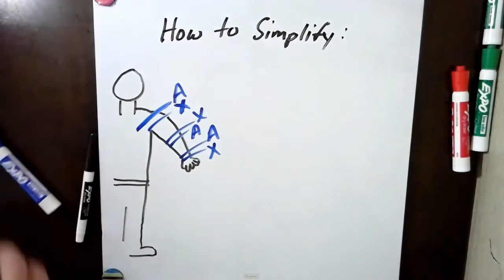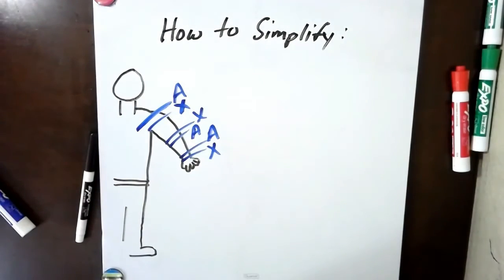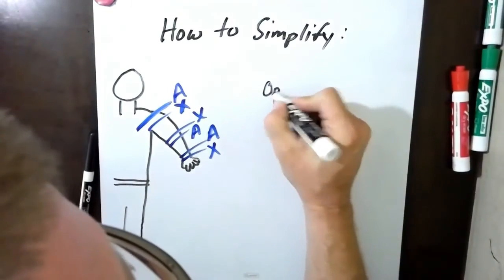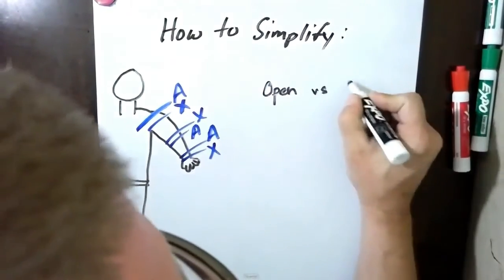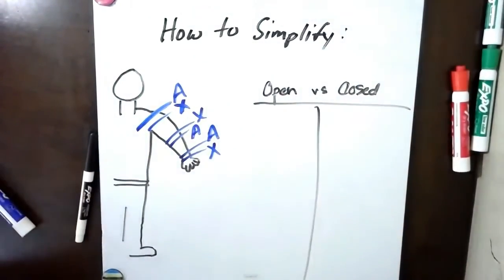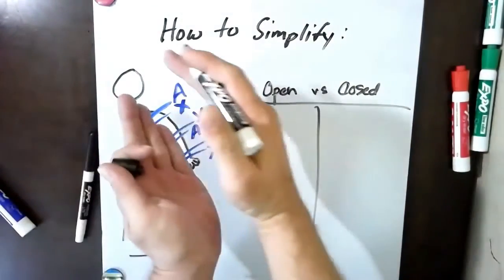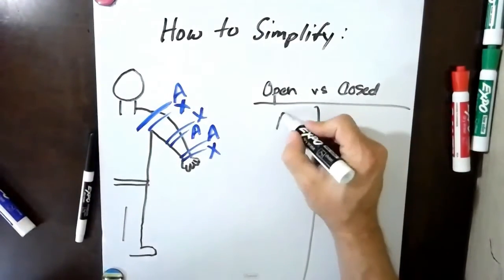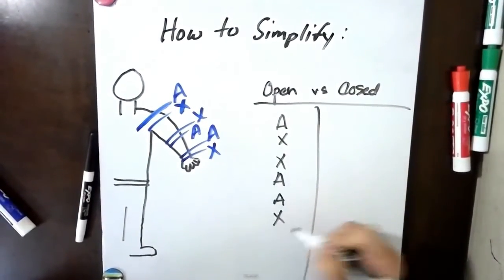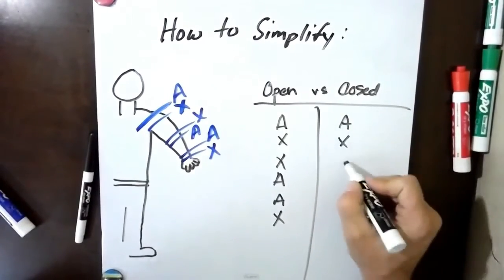So now let's just bring it over and set it up. So the board is going to take this now and apply it to open chain versus closed chain activities. So let's put open versus closed. Let's then transpose these letters into the two columns: A-X, X-A, A-X. We'll do it again: A-X, X-A, A-X.